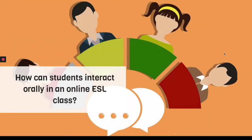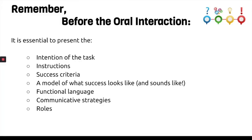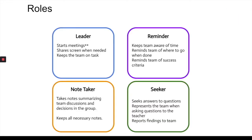Just how can students interact orally in an online ESL class? Remember that before oral interaction, it's essential to present the intention of the task, the instructions, success criteria, and maybe a model of what success looks and sounds like. This year would be a good time to ask students if you could keep their recordings, and with video editing tools like Clips you could make sure students cannot be identified, so future students can hear what success sounds like. You should also go over functional language, or better yet brainstorm it with your students, go over communicative strategies helpful for C1, and review the roles discussed earlier.